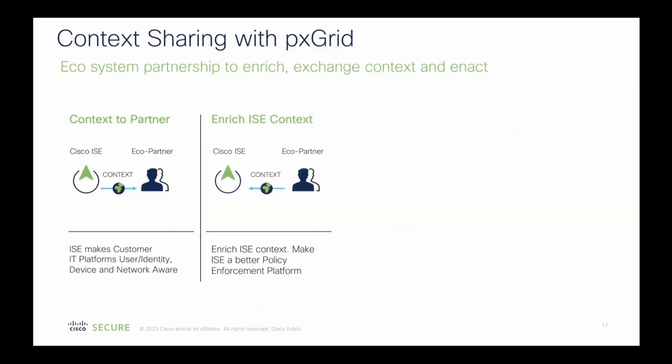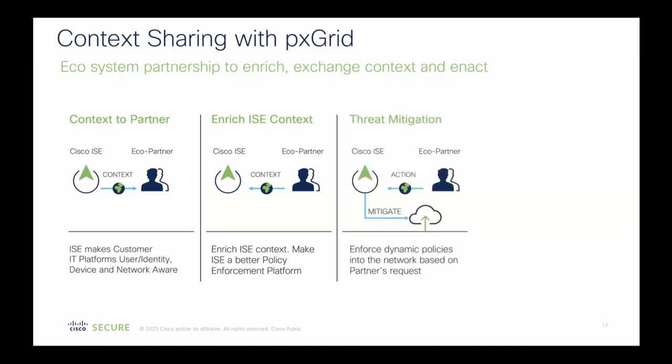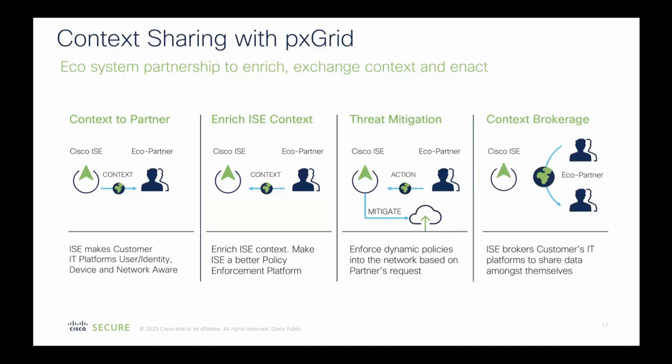Partners can also share information back with ISE. For vertical-specific partners in manufacturing and healthcare doing specialized profiling, they provide more detailed information back into ISE to help classify endpoints. Partners can also call Adaptive Network Control if something happens. Finally, there's the option for one partner to publish something and another to subscribe, where ISE isn't even paying attention to it — all that capability exists today within PX Grid.